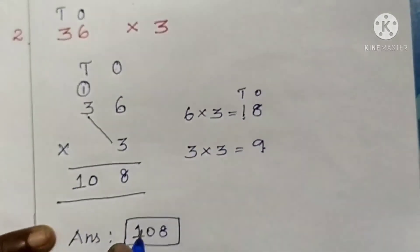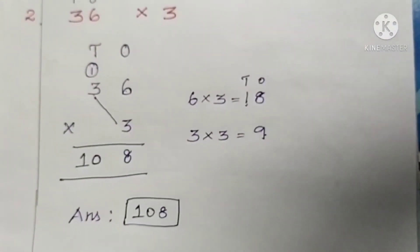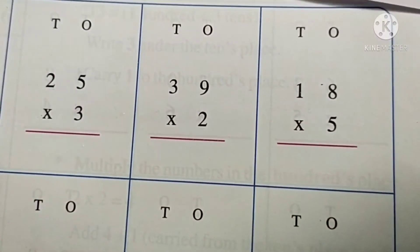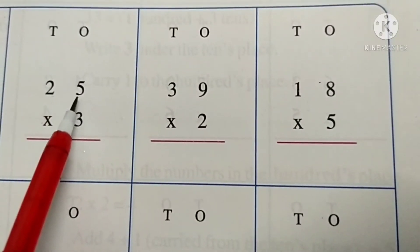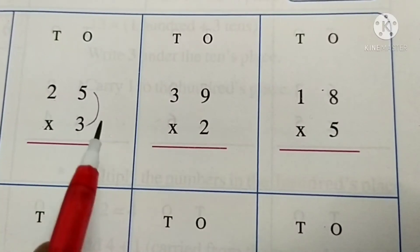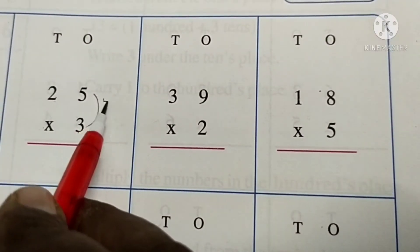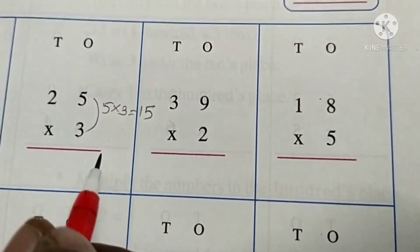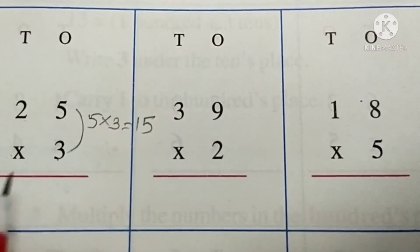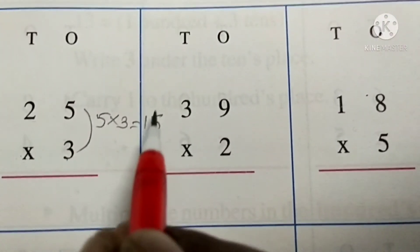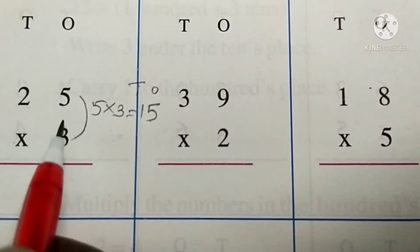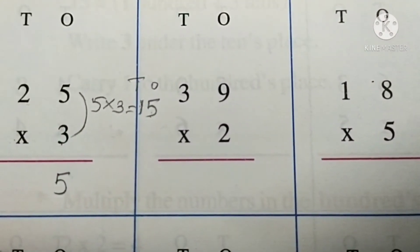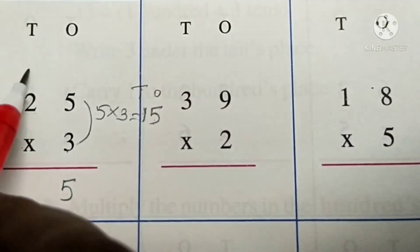Have you understood children? Twenty-five multiplied by three. First, multiply the numbers at the ones place by three. Five threes are fifteen. Write five under the ones place and carry one ten to the tens place.